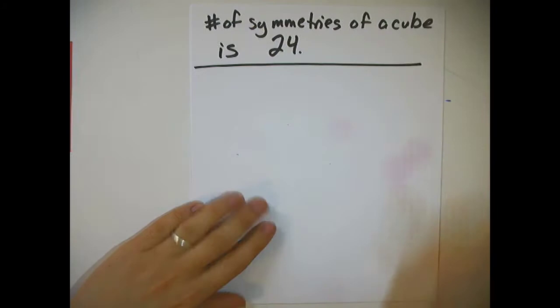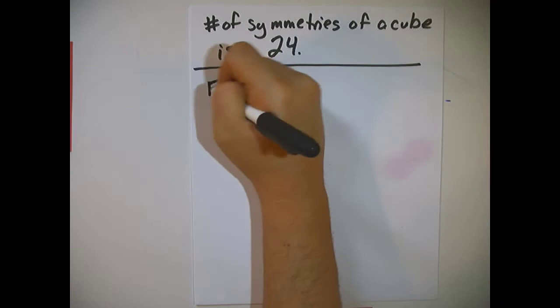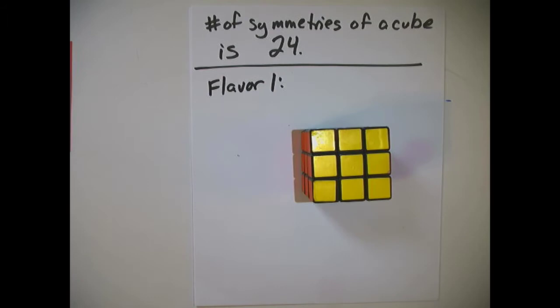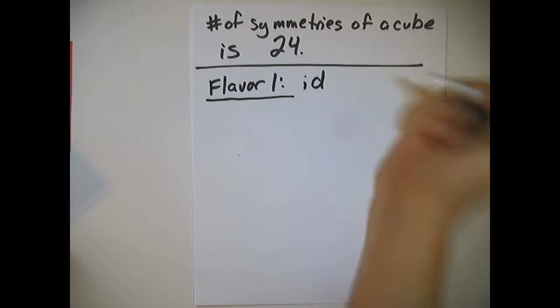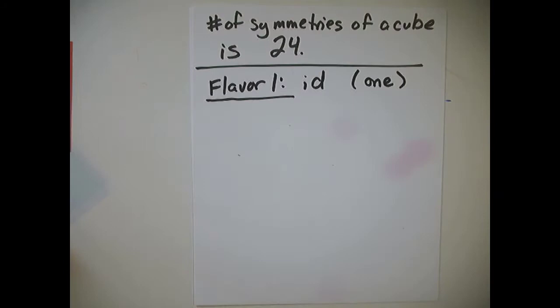The first flavor — this is the boring flavor of symmetry — is the identity: you take the cube and do nothing to it. There is one of these.